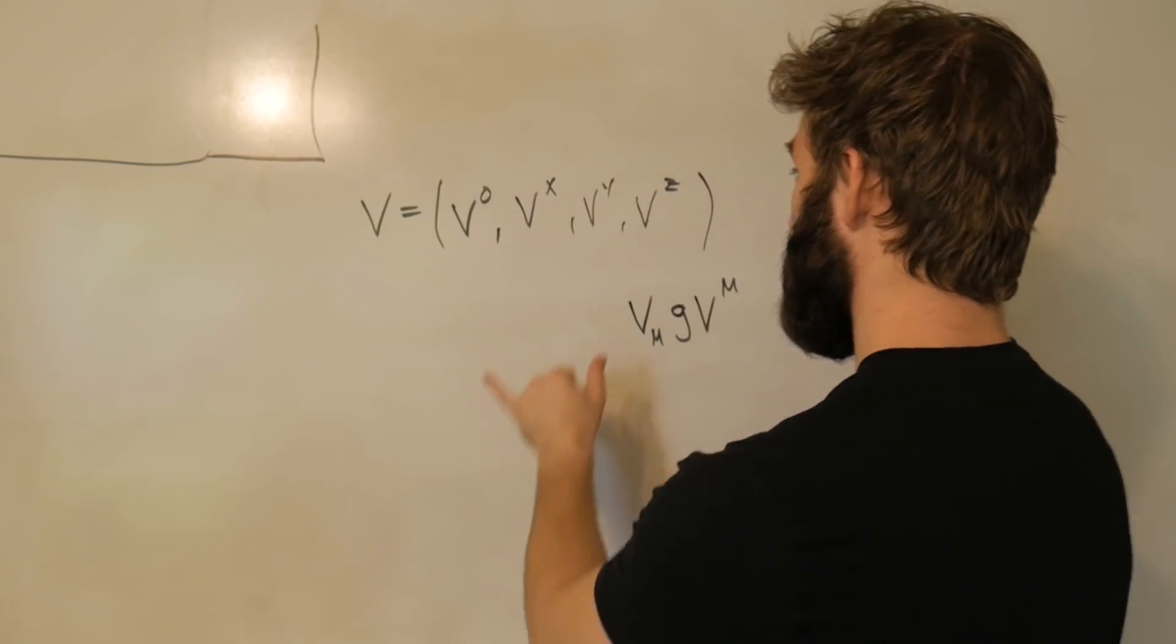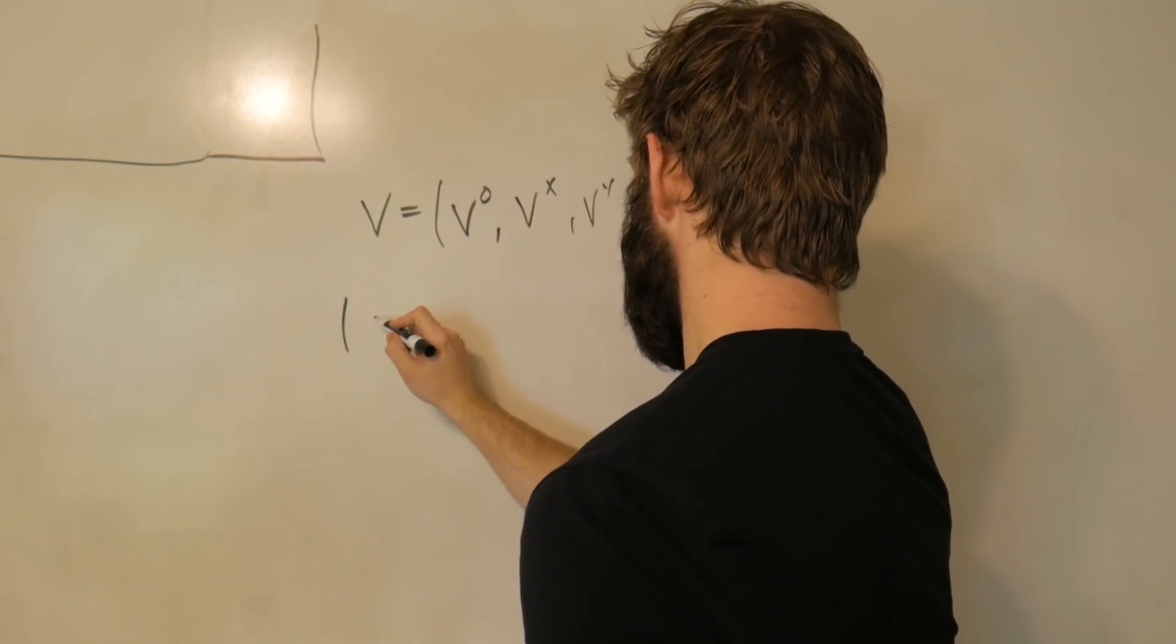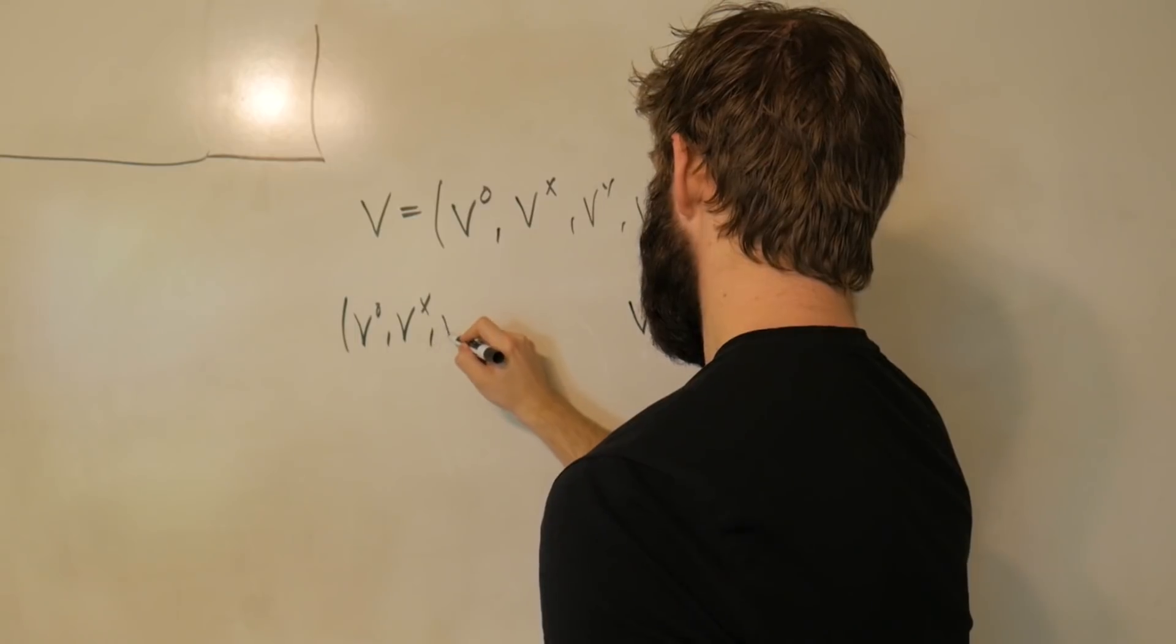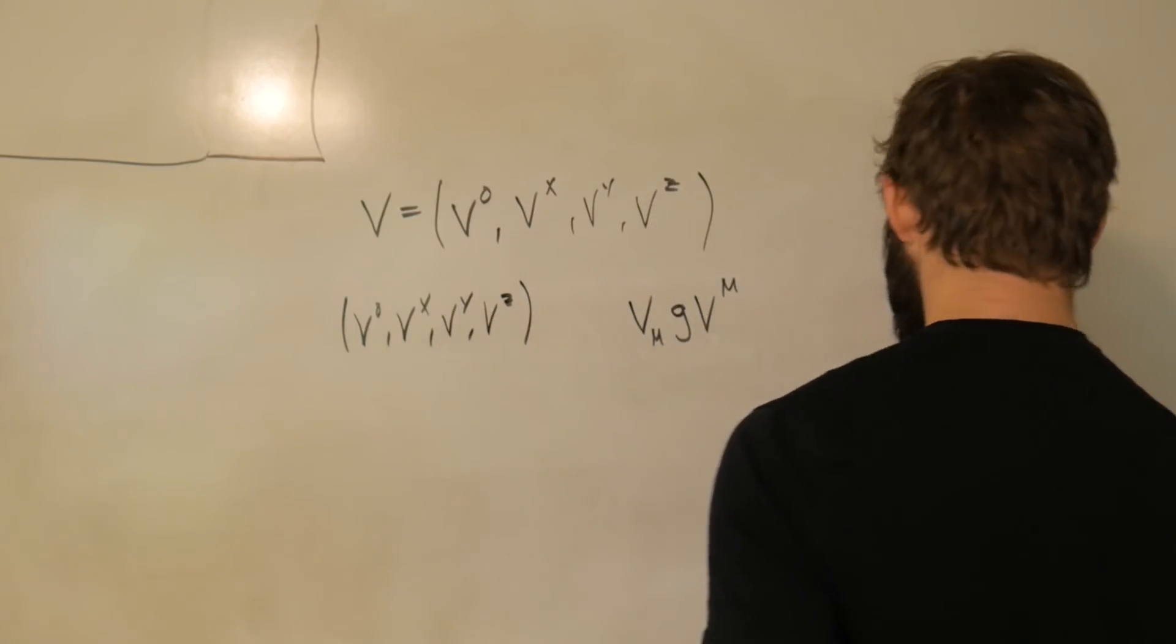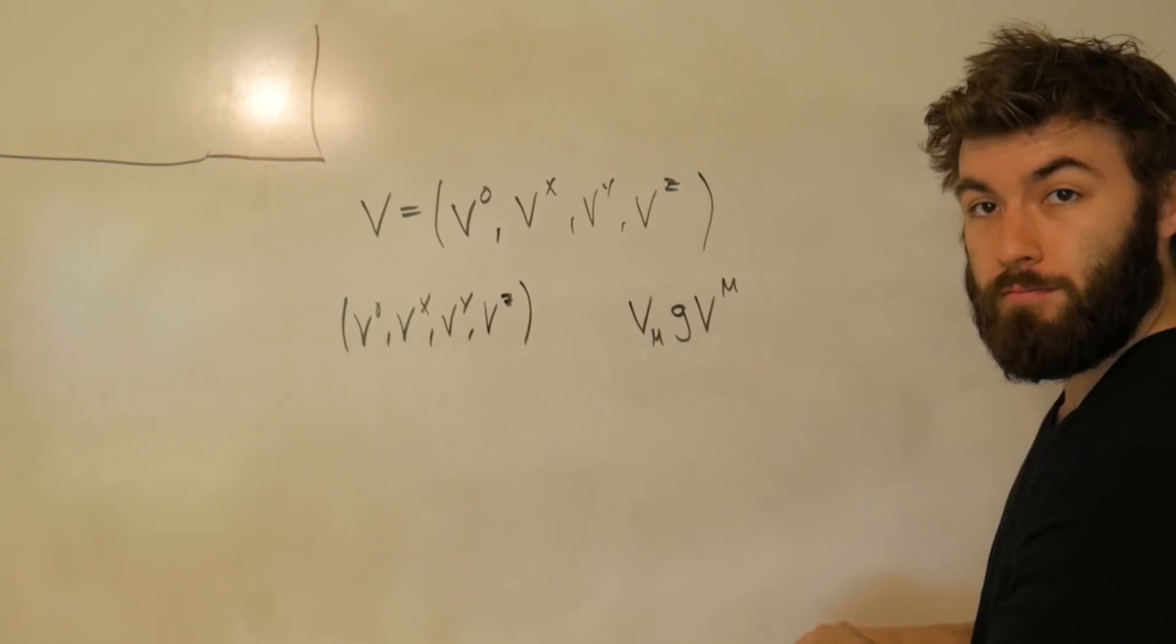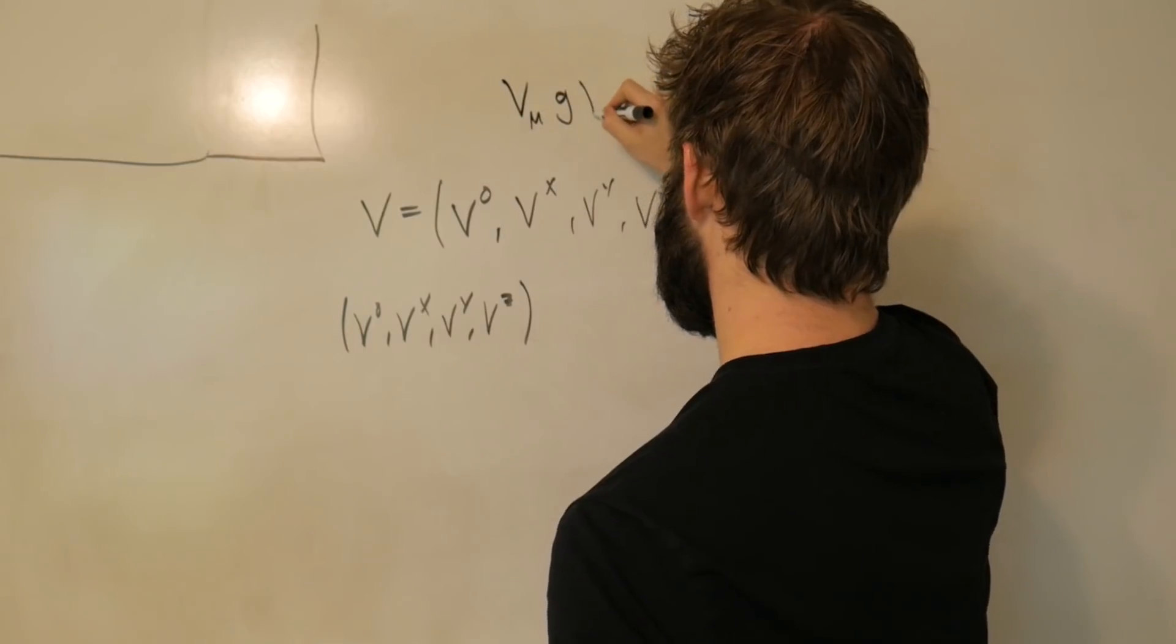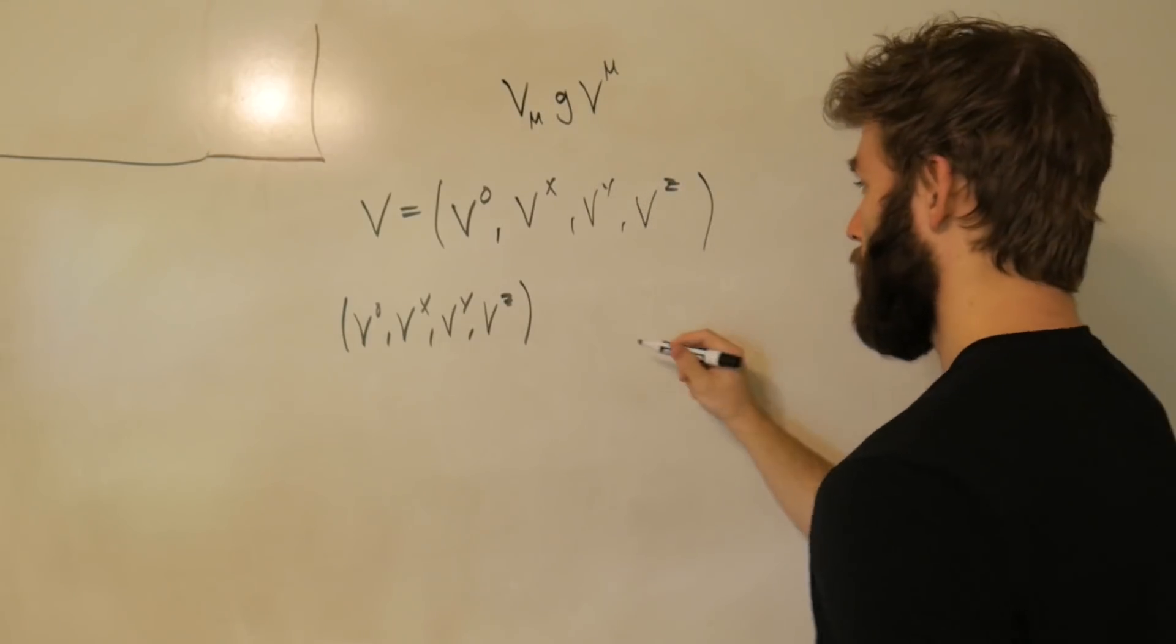So this means v_μ is just going to be the same thing but a row vector. So let's call it v₀, vˣ, vʸ, vᶻ. And then we write this up here. So we want to find v_μ, g, v^μ.